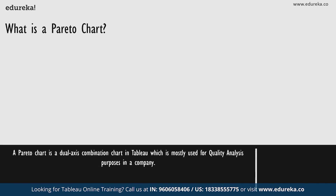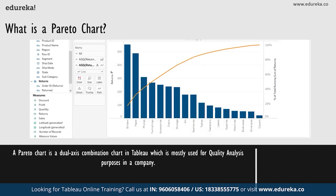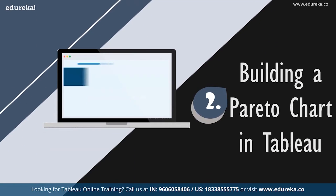A Pareto chart is basically a dual axis combination chart in Tableau. On its primary axis, bars are used to show basic raw quantities for each dimension, usually sorted in a descending order. On a secondary axis, a line graph is then used to show the cumulative total in a running percentage format. While this chart type serves a variety of purposes, it is most known for being a part of the seven basic tools of quality control, and is traditionally used to identify the biggest opportunities for improvement.